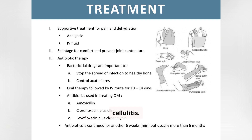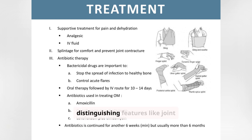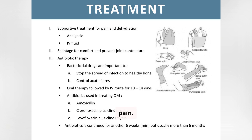Differential diagnosis of osteomyelitis includes conditions like rheumatic fever, Ewing's sarcoma, and cellulitis. Accurate diagnosis requires distinguishing features like joint effusion and intense pain.